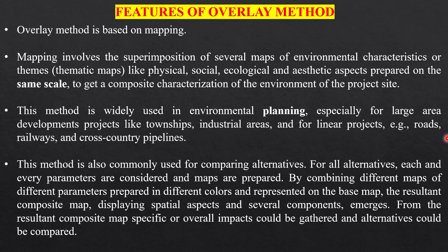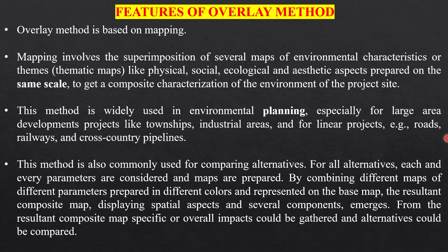This method is commonly used for comparing alternatives. For all alternatives, each and every parameter is considered and maps are prepared. By combining different maps of different parameters prepared in different colors and represented on the base map, a resultant composite map displaying spatial aspects and several components emerges, from which overlay impacts could be gathered and alternatives could be compared.